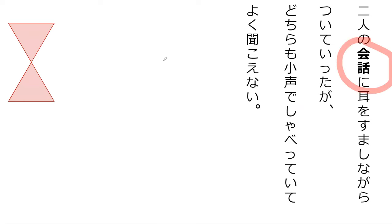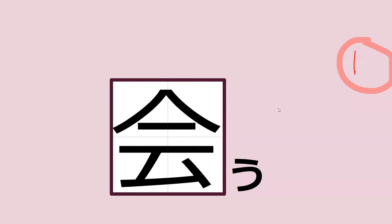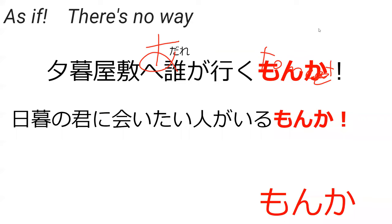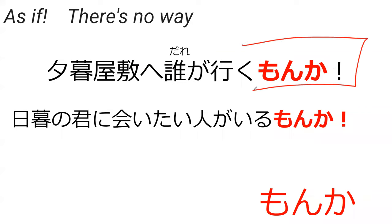Do you remember what this word was? Kaiwa. Kaiwa — conversation. This kanji 'kai' shows up in this verb. Do you know how it's read? Good guess — it's actually 'au.' Read totally different. Au means to meet. So next we're looking at monka.